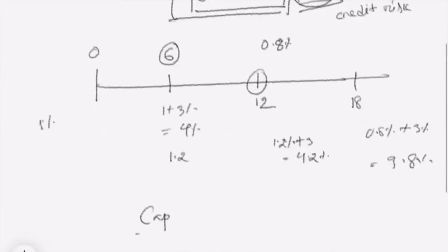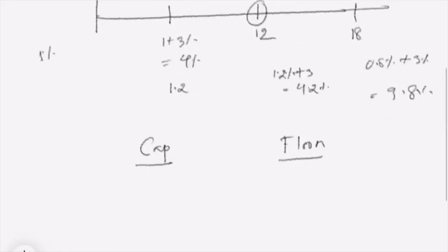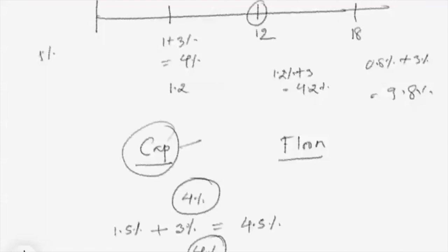In a floating rate note, there can be a cap and a floor. If a floater is issued with a cap of 4 percent and LIBOR is 1.5 percent with a quoted margin of 3 percent, the formula gives 4.5 percent. However, since there is a cap of 4 percent, the coupon payment cannot exceed 4 percent. A cap is a benefit to the issuer.